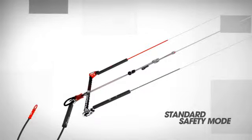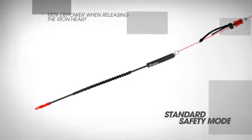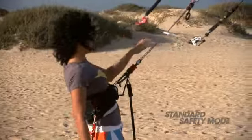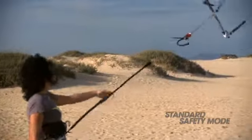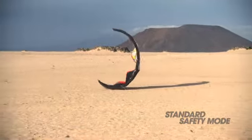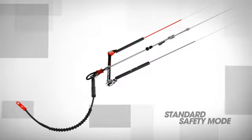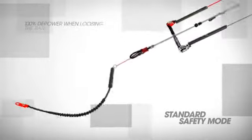While riding hooked in standard safety mode and you release the system, you will immediately have 100% depower. When attempting an unhook trick in standard safety mode and you release your bar, you will also immediately have 100% depower.